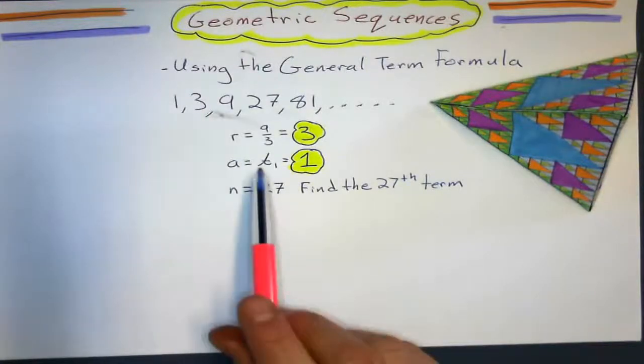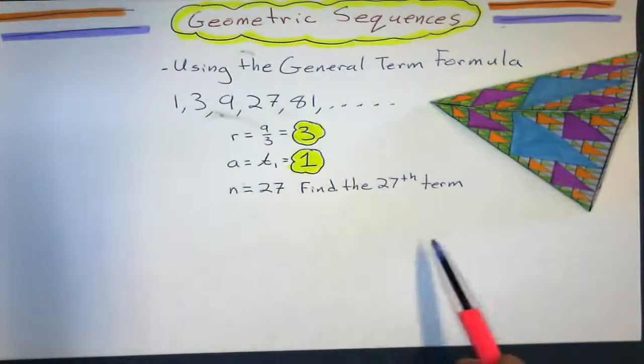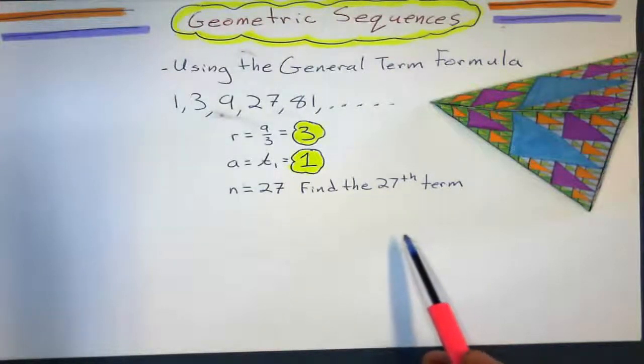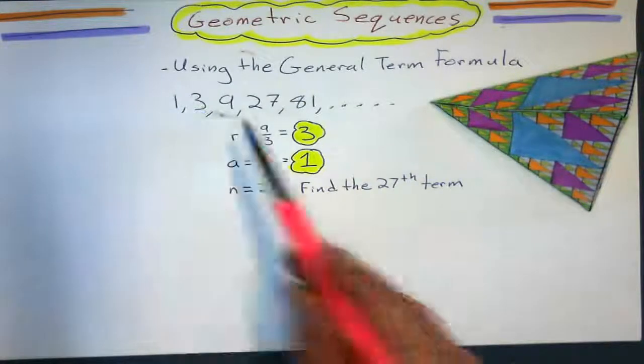And so what we learned last time is if I start at term 1, it'll take me 26 steps to get to that 27th term. It'll take me 26 steps if I start here.